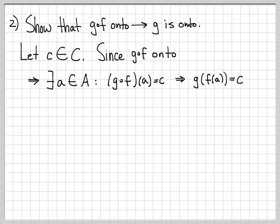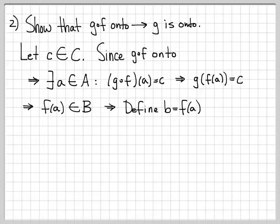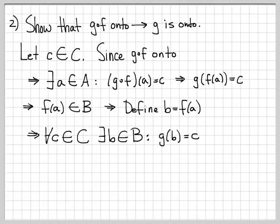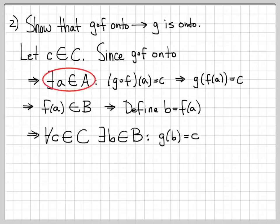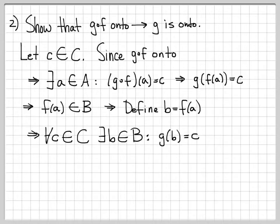In other notation, g(f(a)) = c means f(a) is some element of B. So let's define b = f(a) — f(a) is just some element in the set B, so instead of calling it f(a) we call it b. So for all c in C, there exists a b in B such that g(b) = c. Why? We chose an arbitrary element c in C; since g∘f is onto, there is an a in A. Given that a, we plug it into f to get b. So there existing an a in A means there exists a b in B.